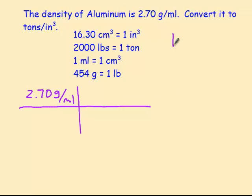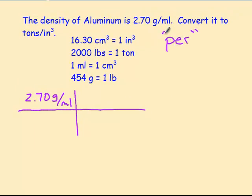And the key that I like to point out is that word per. So we have grams per milliliter, things like miles per hour, tons per cubic inch, and that would mean it's divided by. So when we say grams per milliliter in our chart, we're going to put grams per milliliter like this.